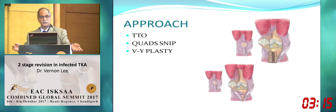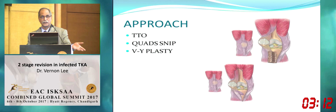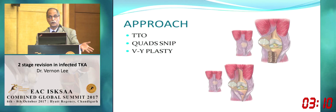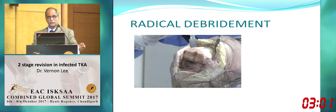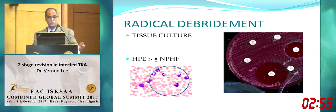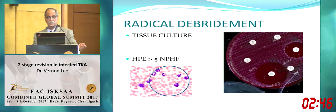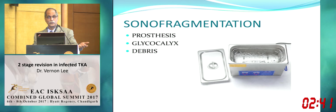The approach needs to be adequate — tibial tubercle osteotomy may be required if exposure is inadequate. Radical debridement is critical — get everything out. Tissue culture, high-power field microscopy may not be definitive but is good for documentation in this era of medical-legal issues. Sonofragmentation is available and helps break down the glycocalyx for better bacterial yield. Spacers are static and articulating — custom-made ones allow greater antibiotic elution due to better porosity.